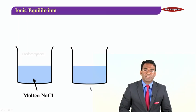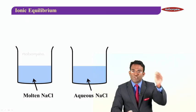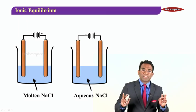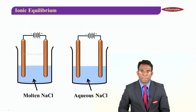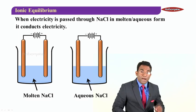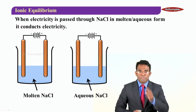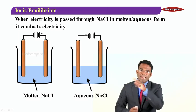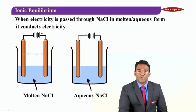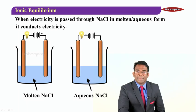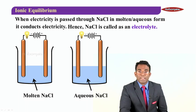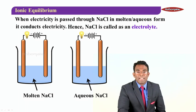In another vessel I have taken aqueous NaCl — that is NaCl dissolved in water. In both these vessels, I am going to dip two electrodes connected to a source of electricity. When electricity is passed through NaCl in the molten or aqueous form, in both cases the solution starts conducting electricity. So we can call NaCl an electrolyte — a substance which in its molten or aqueous form becomes a conductor of electricity.